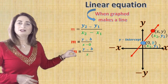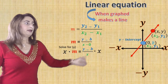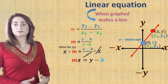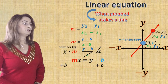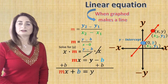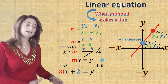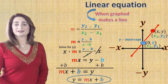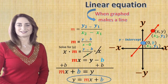I need to isolate y. First, multiply both sides by x to get mx equals y minus b. Then add b to both sides: mx plus b equals y. Rearranging gives y equals mx plus b. This is the linear equation we will be working with today.